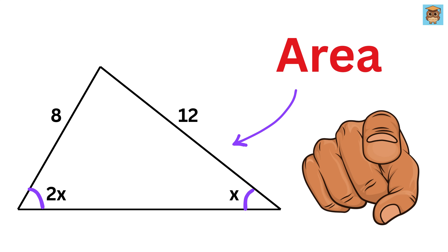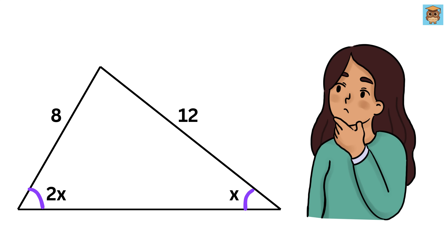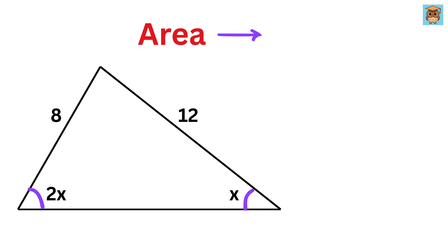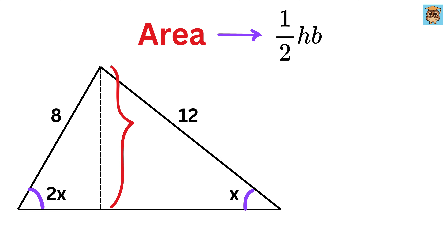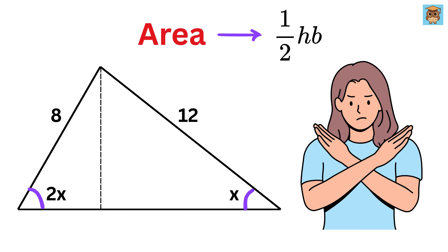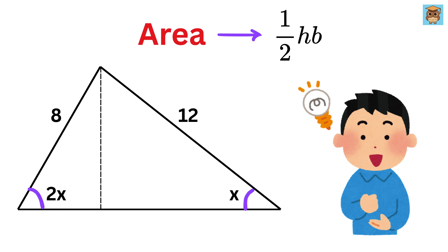Can you solve it? What can we think of as the first step? Area of a triangle is equal to half of its height times its base. This is the base of this triangle, and this is the height. But right now, we don't have the value of either of them, so let us find them out.